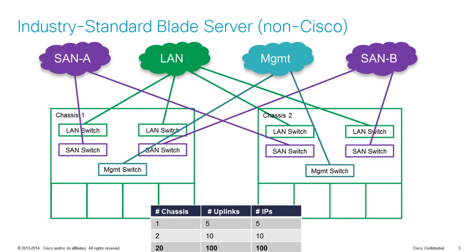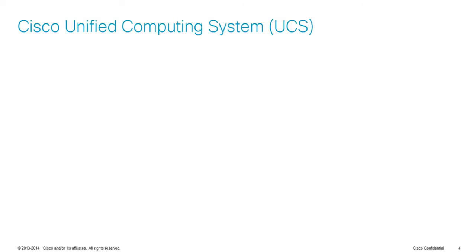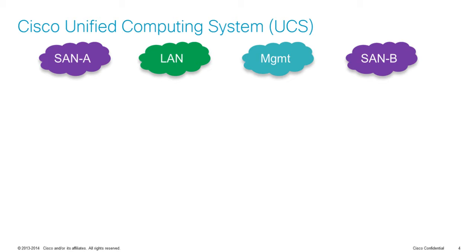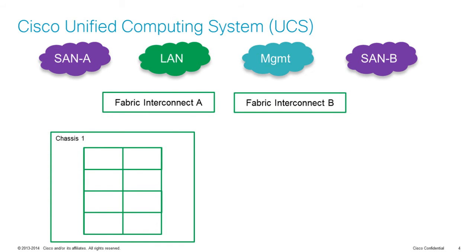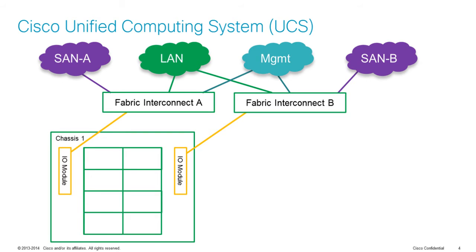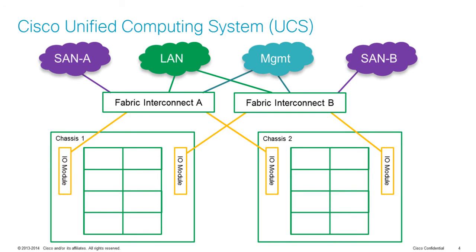We got rid of that complexity in Cisco UCS. We're not interfering with the data center design — what we are doing is introducing a pair of fabric interconnects that handle connectivity to those data center networks. You then connect each individual chassis to the pair of fabric interconnects through what we call input-output modules, and you gain a significantly reduced complexity of both cabling and management. If you need to deploy a new chassis, the only thing you need to do is plug each input-output module to its fabric interconnect.